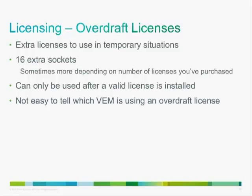Overdraft licenses are extra licenses available for temporary situations. By default, you get 16 extra sockets, though the number may vary depending on how many licenses you've purchased. These can only be used after a valid license is installed — you can't use an overdraft license if you don't have enough licenses to cover all connected hosts. They're intended for scenarios like migrating from older servers to new servers. If you're using overdraft licenses, you won't be refused support, but you'll be advised to either buy more licenses or switch back to Essentials.